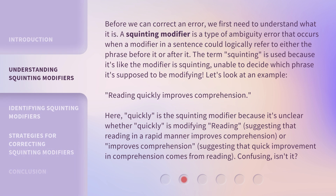Before we can correct an error, we first need to understand what it is. A squinting modifier is a type of ambiguity error that occurs when a modifier in a sentence could logically refer to either the phrase before it or after it. The term "squinting" is used because it's like the modifier is squinting, unable to decide which phrase it's supposed to be modifying.